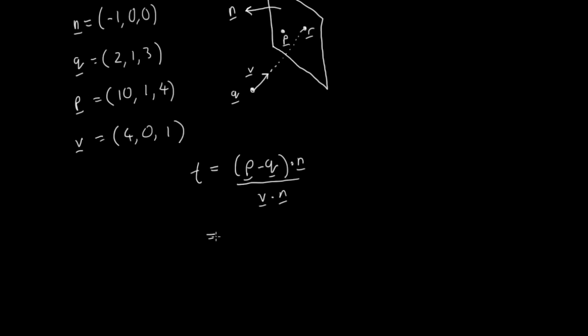So for P, we have 10, 1 and 4 minus Q, which is 2, 1 and 3. And that's dot product with N, which is minus 1, 0, 0. So all I've done here is replace P, Q, N and V with these vectors up here.